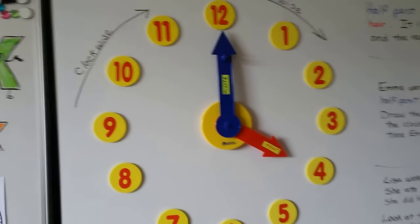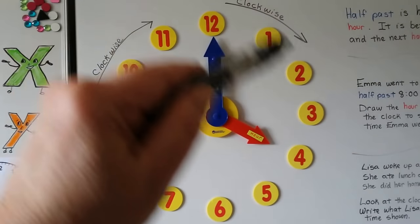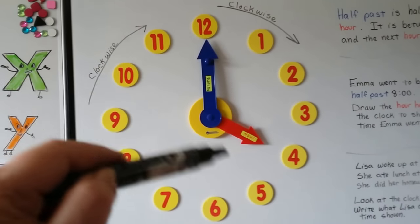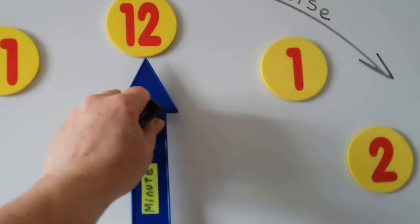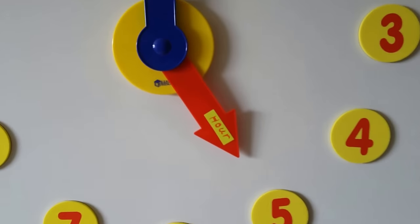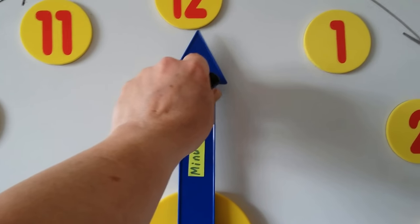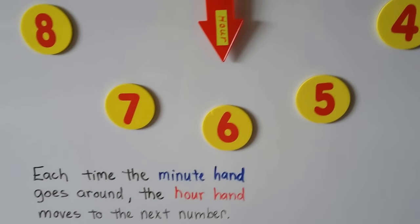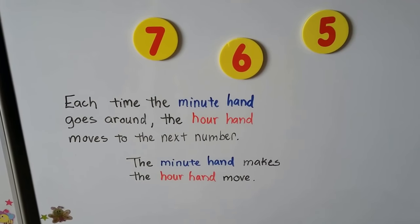Now, this is my big huge teaching clock. As the hour hand and the minute hand go around, they go around in this direction — that's called clockwise. Every time the minute hand goes around one full time, the hour hand moves to the next number. The minute hand is pointing to the 12; if it goes all the way around back to the 12, the hour hand moves to the next hour. The minute hand makes the hour hand move — they work together like gears.